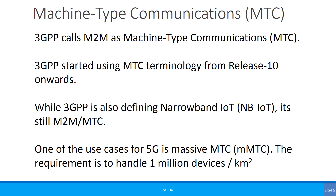3GPP started using MTC from Release 10 onwards, so you would find MTC referenced from Release 10. While 3GPP is also defining NB-IoT — narrowband IoT — it's still M2M or machine type communications. One of the use cases for 5G is massive machine type communication, and the requirement there is to be able to handle 1 million devices per square kilometer.